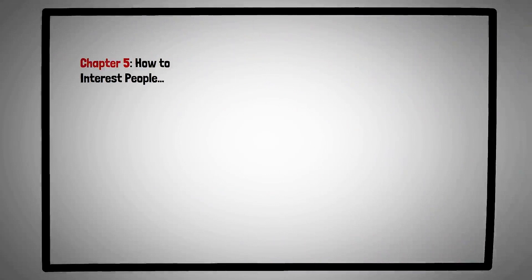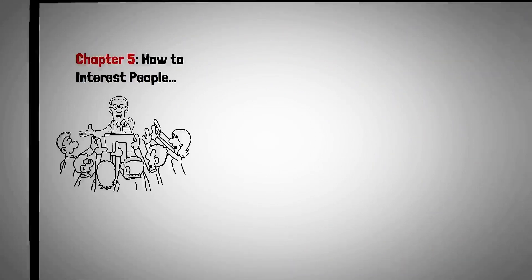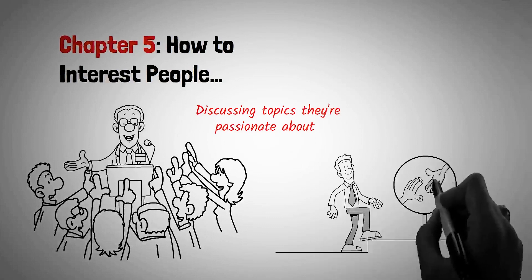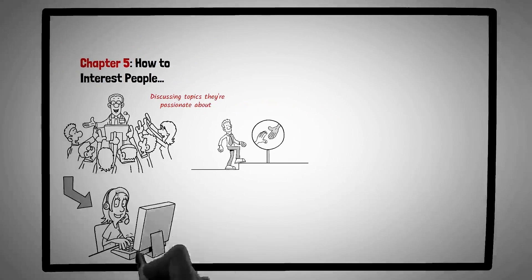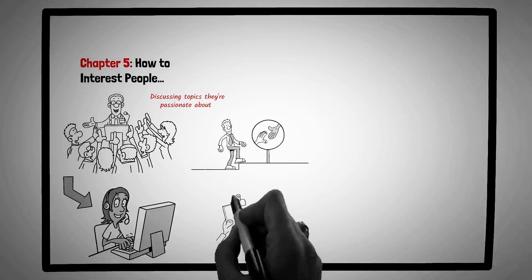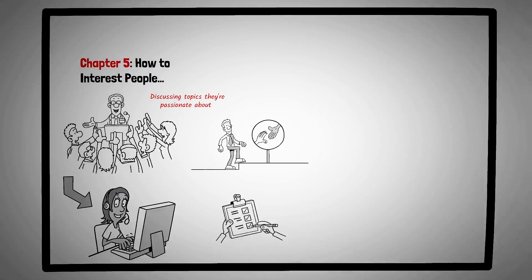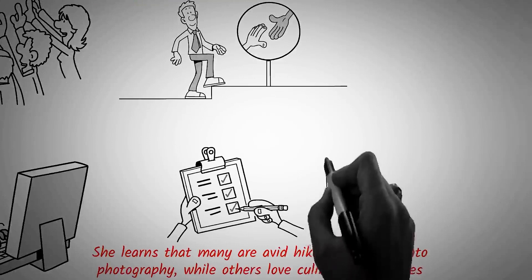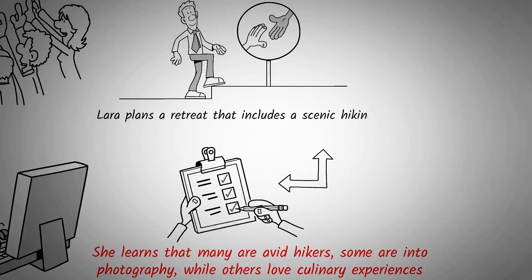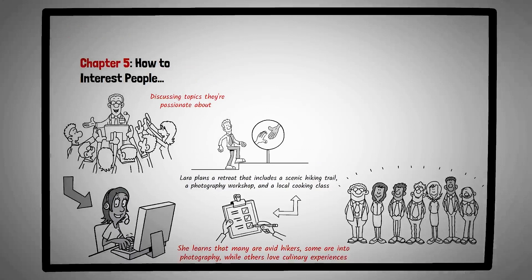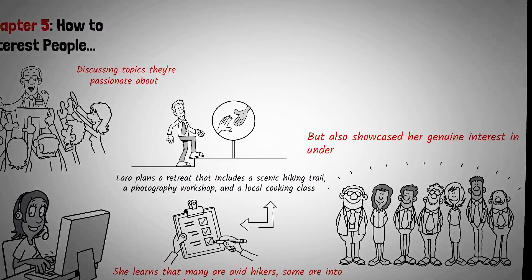Chapter five, how to interest people. One of the most effective ways to engage and captivate someone is by discussing topics they're passionate about. This chapter delves into the art of conversing in terms of another person's interests, highlighting its role in building rapport and fostering genuine connections. Meet Lara, a corporate event planner tasked with organizing a company retreat. Instead of choosing generic team building activities, she decides to take a different approach. Lara schedules one-on-one meetings with employees from various departments, asking them about their hobbies and passions outside of work. She learns that many are avid hikers, some are into photography, while others love culinary experiences. Using this information, Lara plans a retreat that includes a scenic hiking trail, a photography workshop, and a local cooking class. The retreat is a massive success, with employees raving about how personalized and engaging the activities were. Lara's approach of tailoring the event to the employee's interests not only made the retreat memorable, but also showcased her genuine interest in understanding and valuing her colleagues.